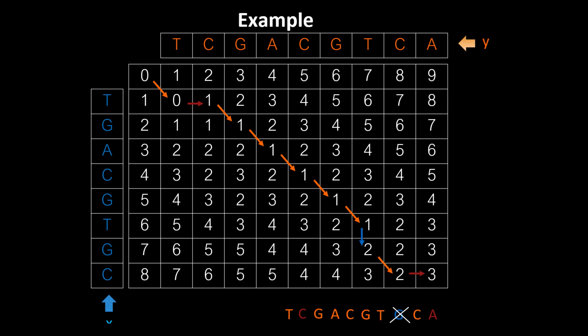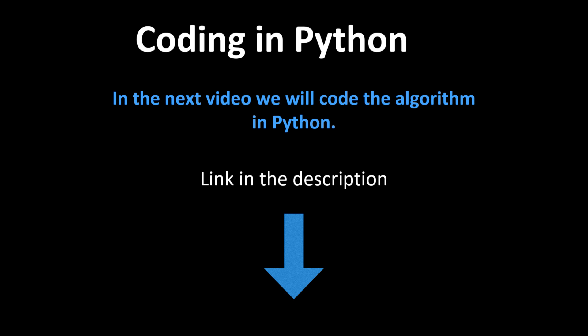A quick note on time complexity: finding each specific array value takes constant time, but we need to fill the entire m×n matrix. So the time complexity is O(m × n). In the next video, I will code this algorithm in Python — check that out if you want the implementation details.